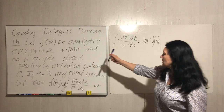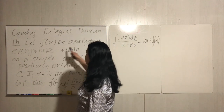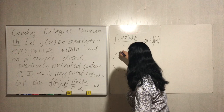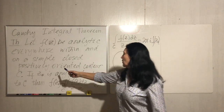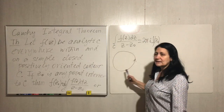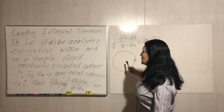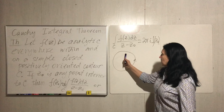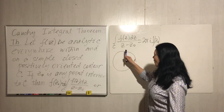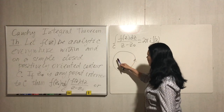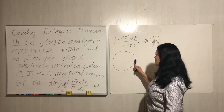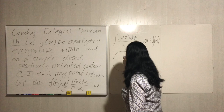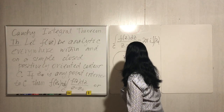Let's draw the setup. We have contour C which is simple — no self-intersections — closed, and positively oriented. Positively oriented means the enclosed interior domain is always on the left as we traverse the contour. The point z sub zero is somewhere inside.